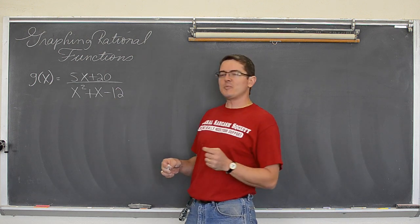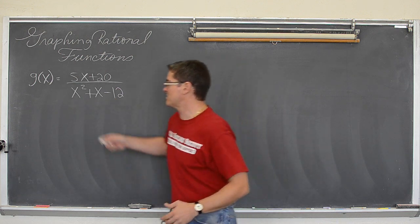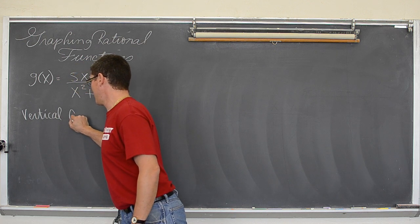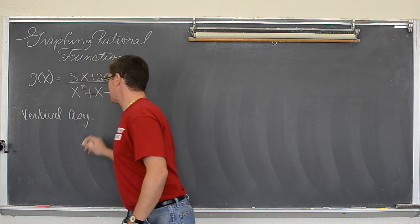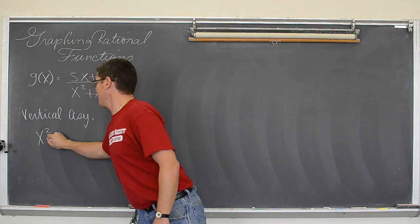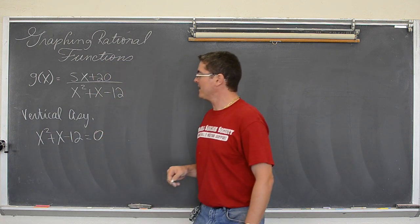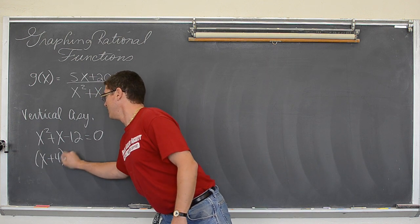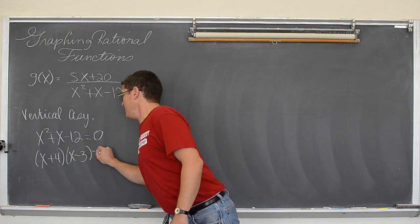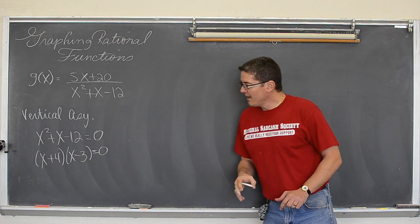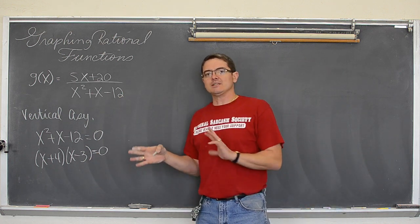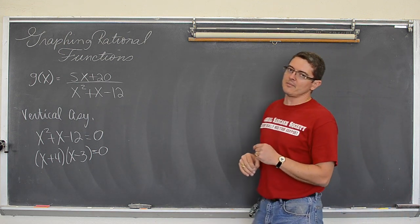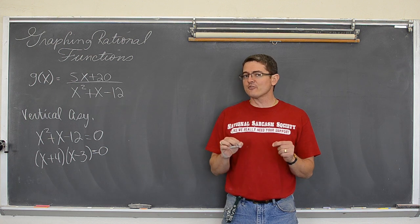So you might be asked to graph this. Don't be too anxious and go okay vertical asymptotes. Those are when the denominator equals zero. Most of the time when the denominator equals zero you have a vertical asymptote. But not every time.